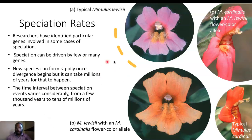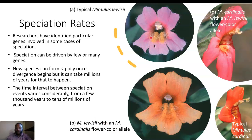A classic example is the Mimulus lewisii flower. The typical Mimulus lewisii shown in A is the founder flower. In B, Mimulus lewisii with an M. cardinalis flower color allele shows a new flower color arising from interspecies mating. The M. cardinalis with an M. lewisii flower color allele creates an intermediate flower color from mating between the two species. Finally, the typical Mimulus cardinalis mated with the others creates different hybrid flowers demonstrating speciation rates and hybridization among plants.